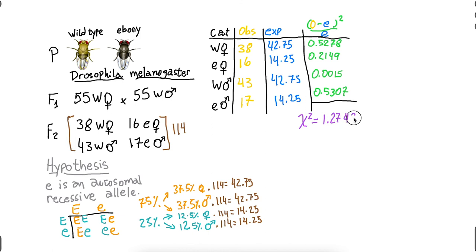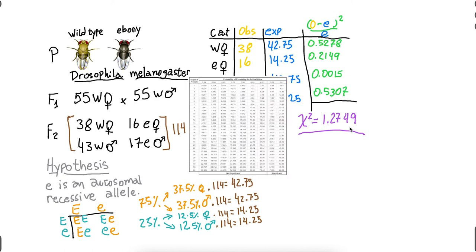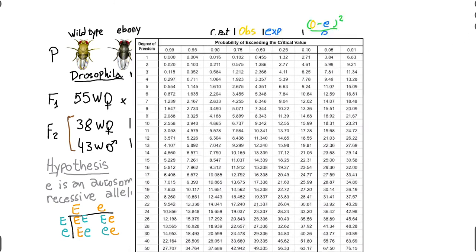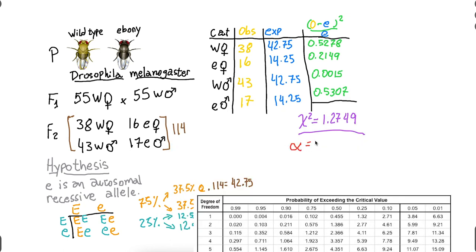Right? Again, what do I do with this number now? I have to go to my chi-square table and take a look. Now, as always, my alpha level will be 0.05. That gives me a 95% interval of confidence. Now, how many degrees of freedom do I have? It's the number of categories minus 1.